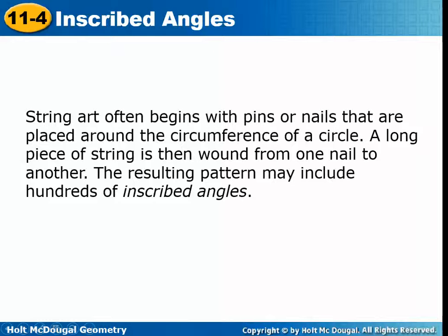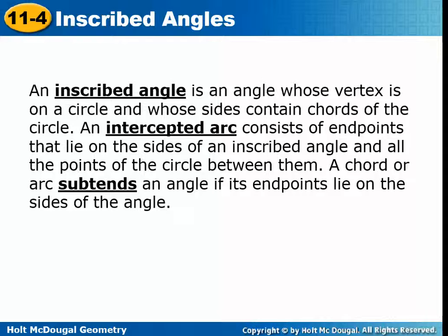One example of inscribed angles is string art. This is where you have a circle or sometimes a polygon, and you nail little nails around the perimeter. Then you take colored string and wrap it around. The resulting pattern may include hundreds of inscribed angles. An inscribed angle is when the vertex is on the circle and the sides contain chords of the circle.